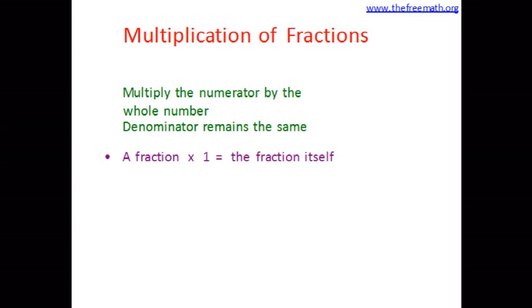Now what if the whole number is 0? That means you are multiplying the numerator by 0. Zero multiplied by anything is 0, so if the numerator is 0 the fraction would be 0. So when we multiply a fraction by 0 the answer will be 0, and when we multiply a fraction by 1 the answer will be the fraction itself.